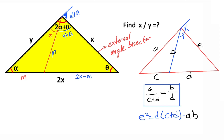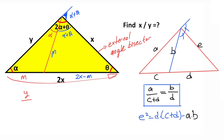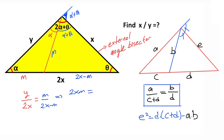Now if we apply this ratio formula, y over 2x must equal m over (2x minus m). After cross multiplication: 2xm = 2xy minus ym, so ym = 2xy minus 2xm. This is our first equation.